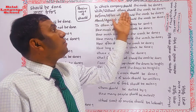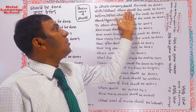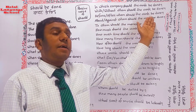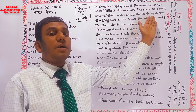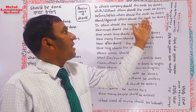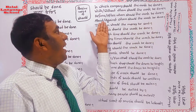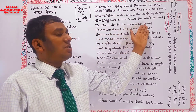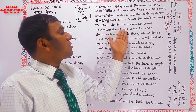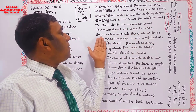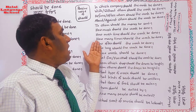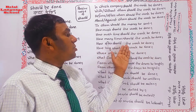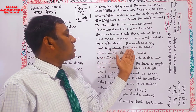Now various question forms with 'should be done': About whom should the work be done? Against whom should the work be done? To whom should the money be sent? How much should the work be done? How much time should the work be done? How many times should the work be done? How often should the work be done? How long should the work be done?